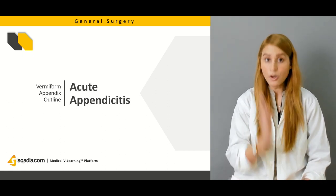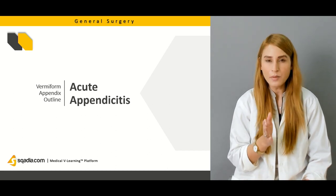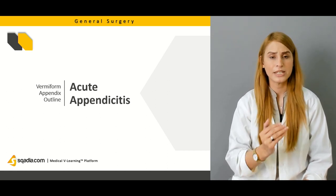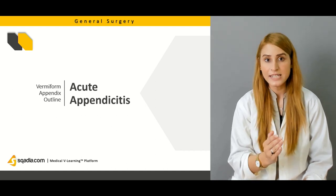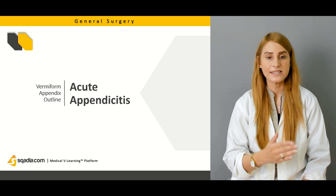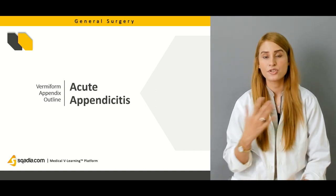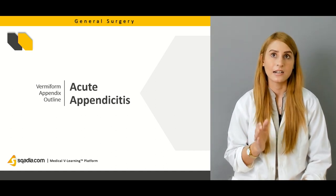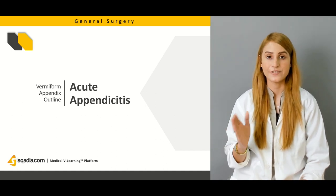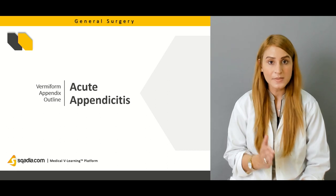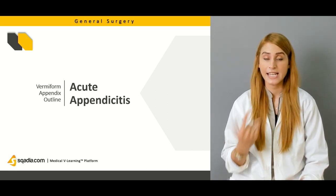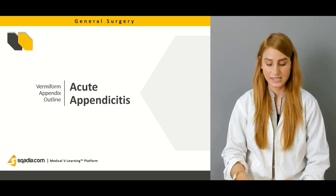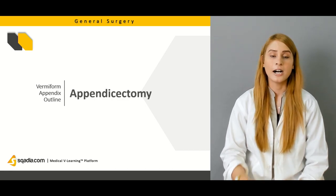The most important and common clinical entity is acute appendicitis. We'll be talking about its presentation, including signs and symptoms such as nausea, anorexia, vomiting, and pain. Pain usually starts from the central abdominal region — the periumbilical region — and then migrates to the right iliac fossa. We'll also discuss signs like tenderness, rebound tenderness, the pointing sign, the obturator sign, the psoas sign, and Rovsing's sign.